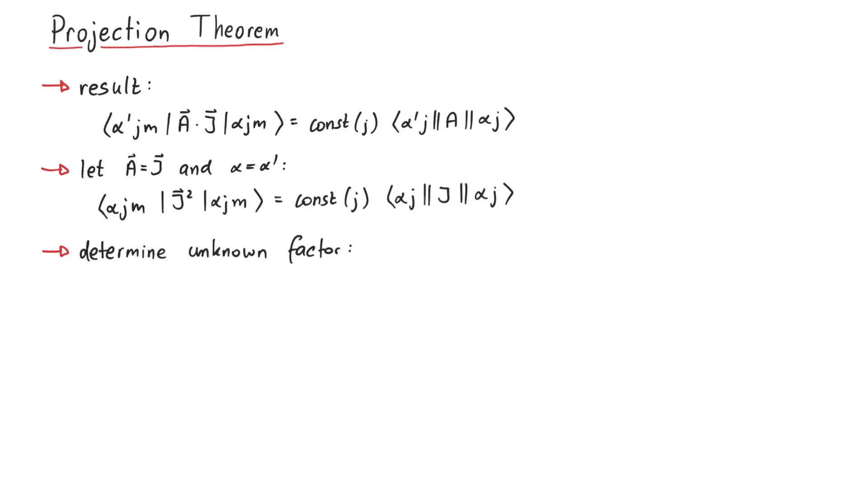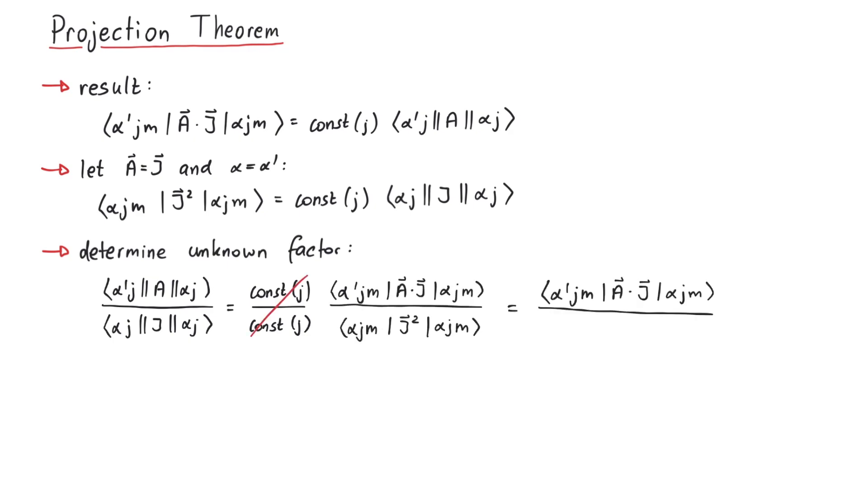In particular, it was given by the ratio of the reduced matrix elements of A and J. We can write this using the new expressions that we just found, and can also let J squared act on the ket state. Using this expression, we have successfully derived the projection theorem for any vector operator A.